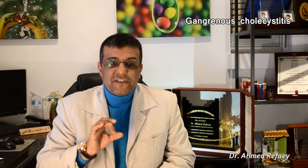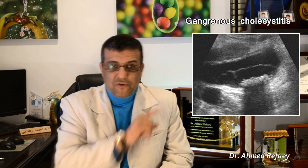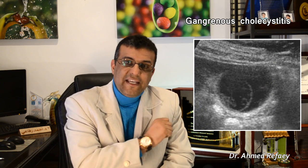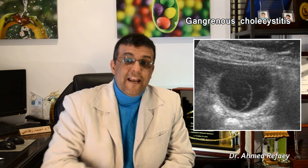Starting with gangrenous cholecystitis: it is a rare and severe complication of acute cholecystitis. The characteristic ultrasound feature is the presence of an intraluminal membrane — this is very important. If you appreciate any intraluminal membrane, as seen here, it is gangrenous cholecystitis until proven otherwise. We also see multiple calcular shadows reflecting marked posterior acoustic shadow. Another example also shows an intraluminal membrane under some intraluminal biliary sludge.